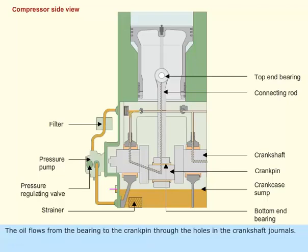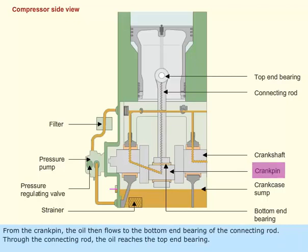The oil flows from the bearing to the crank pin through the holes in the crankshaft journals. From the crank pin, the oil then flows to the bottom end bearing of the connecting rod. Through the connecting rod, the oil reaches the top end bearing.